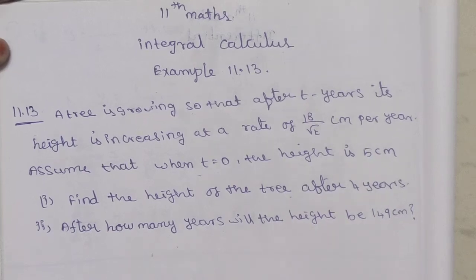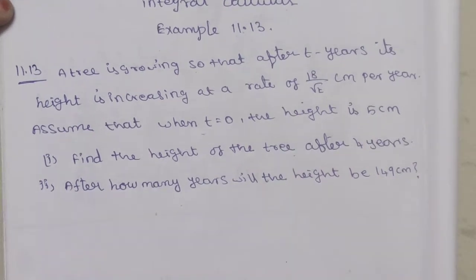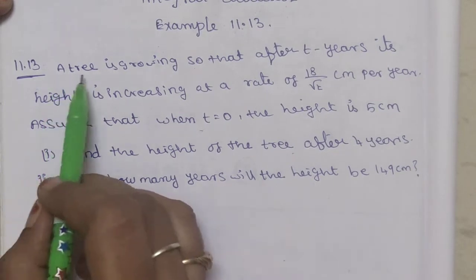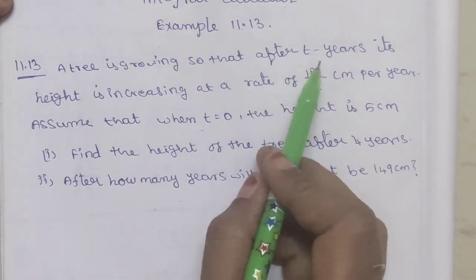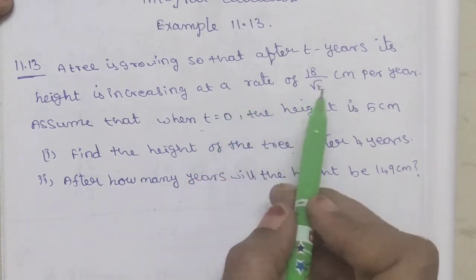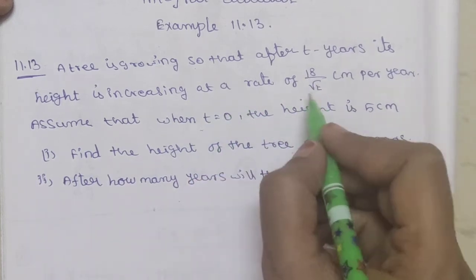Welcome to my channel. In this problem, a tree is growing so that after time T, its height is increasing at a rate of 18 divided by root T centimeters per year.